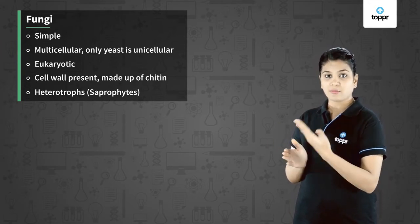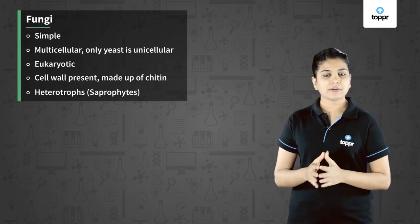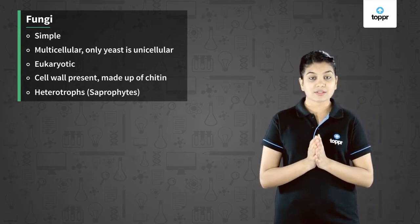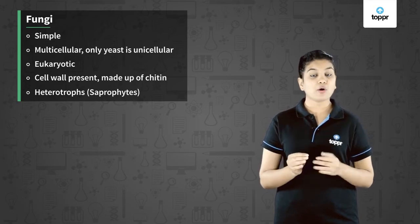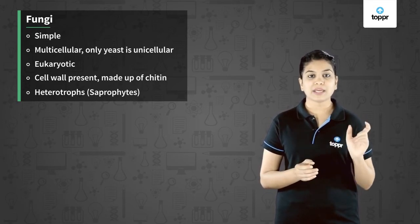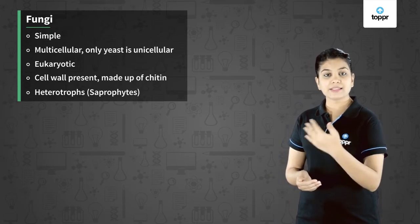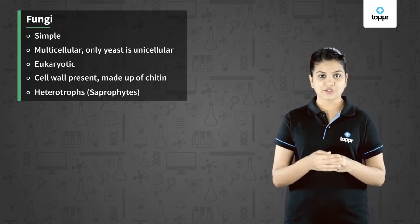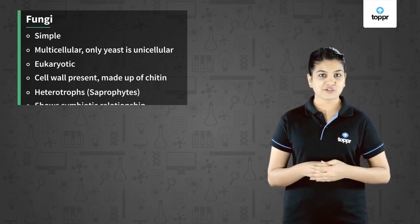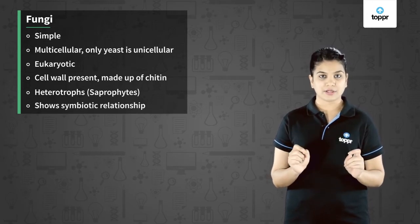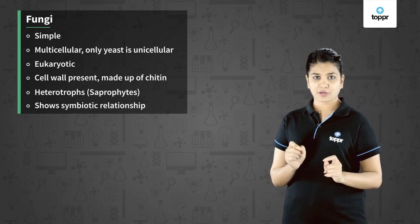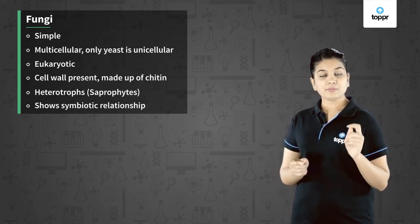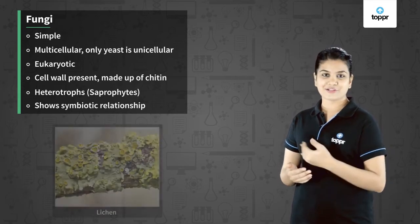Fungi have a very unique property. Some of them can live in association with some other kind of organisms such as blue-green algae or cyanobacteria. When fungi and cyanobacteria live together they mutually help each other and this relationship is called symbiotic. This symbiotic relationship between fungi and blue-green algae is called lichens.